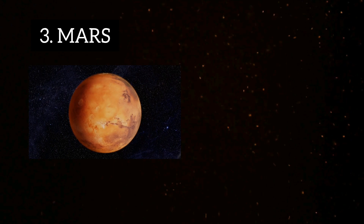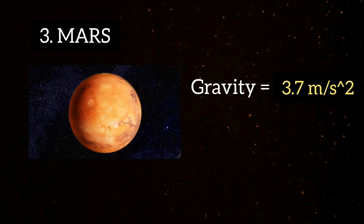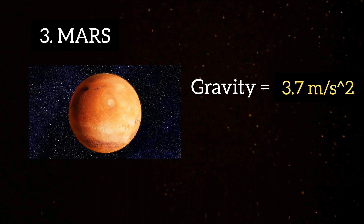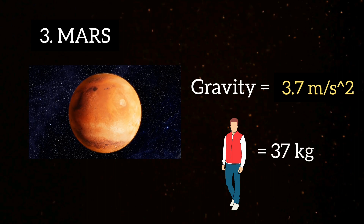Third, Mars, the red planet of our solar system, has a gravity of around 3.7 meters per second square, which is 0.37 times the Earth. The person's weight will be around 37 kg, which is similar to Mercury.